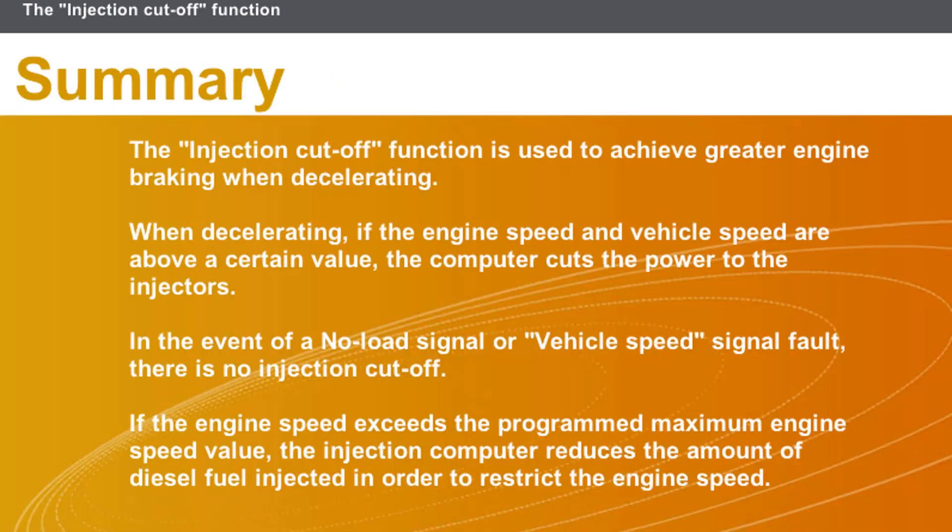In this section, we covered the following points: the injection cut-off function is used to achieve greater engine braking when decelerating; when decelerating, if the engine speed and vehicle speed are above a certain value, the computer cuts the power to the injectors; in the event of a no-load signal or vehicle speed signal fault, there is no injection cut-off; and if the engine speed exceeds the programmed maximum engine speed value, the injection computer reduces the amount of diesel fuel injected in order to restrict the engine speed.